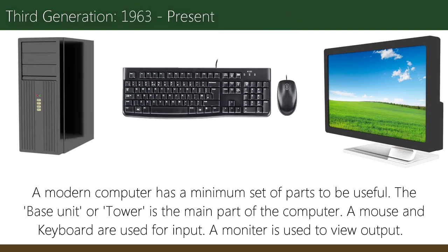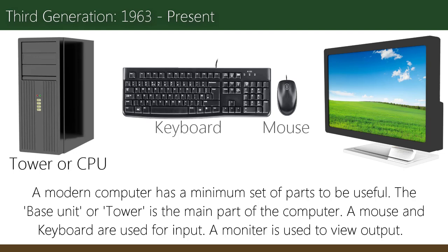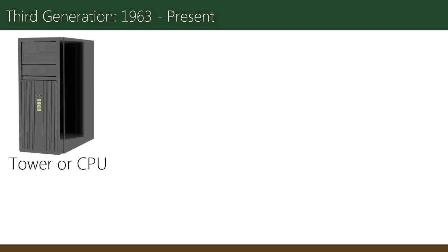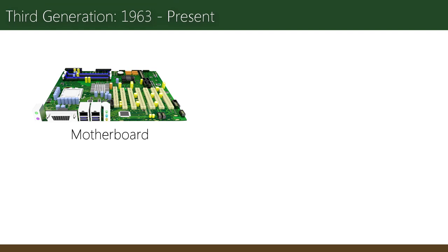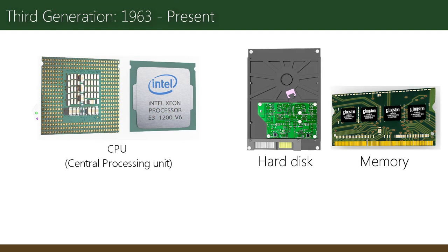The modern computer has a minimum set of parts to be useful. The base unit or tower is the main part of the computer. A mouse and keyboard are used for input, and a monitor is needed to view the output. Inside the base unit or tower there are many electronic parts.